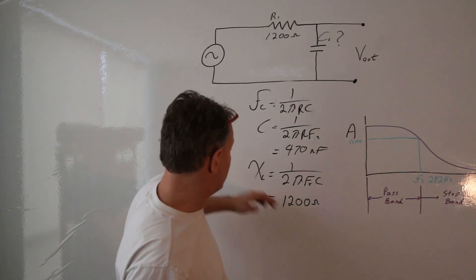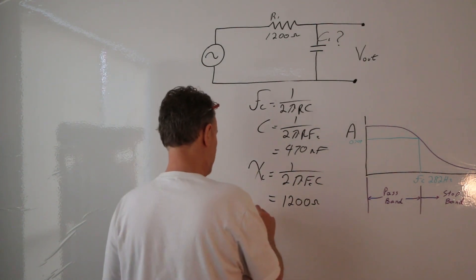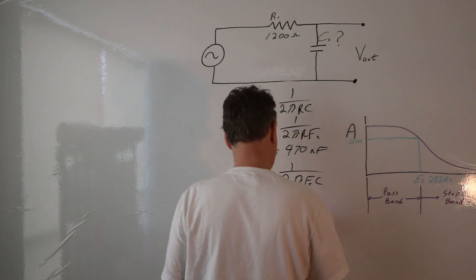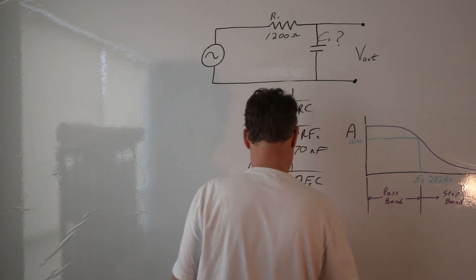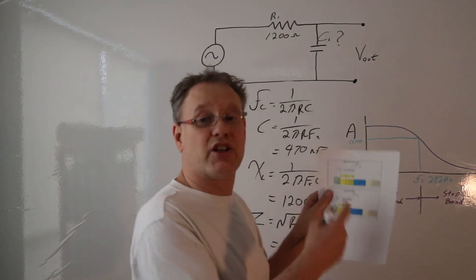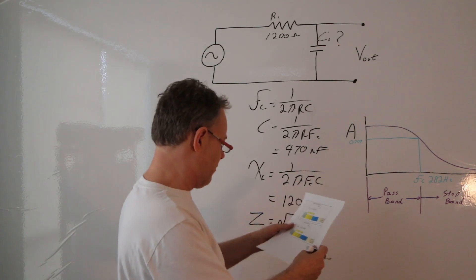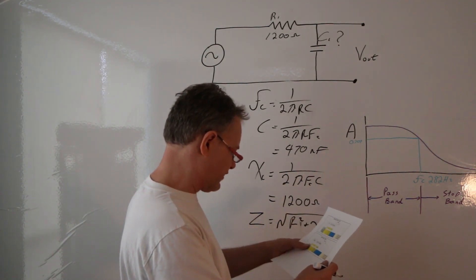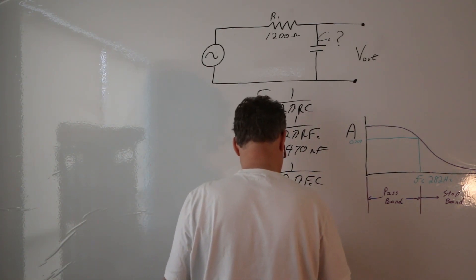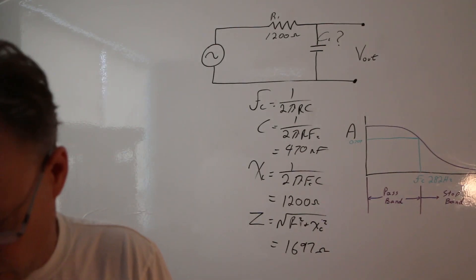I know my Xc is 1200 ohms and I know my capacitance, so now I can calculate my impedance Z. We know that Z = √(R² + Xc²). I calculated this using a spreadsheet, and my total impedance for my low-pass filter is 1697 ohms.